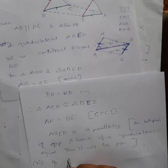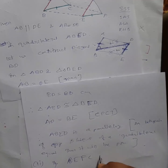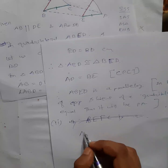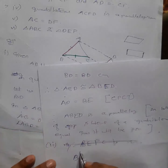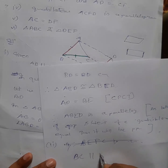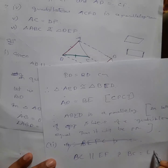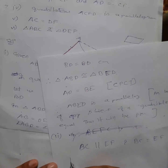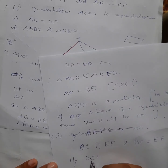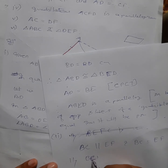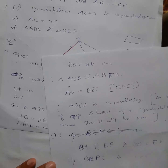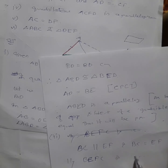For part two, BEFC is a parallelogram. You can write similarly: BC is parallel to EF and BC equals EF is given. By the same argument as part one, BEFC is a parallelogram. You don't have to prove it all over again — write 'similarly' and state the conclusion.